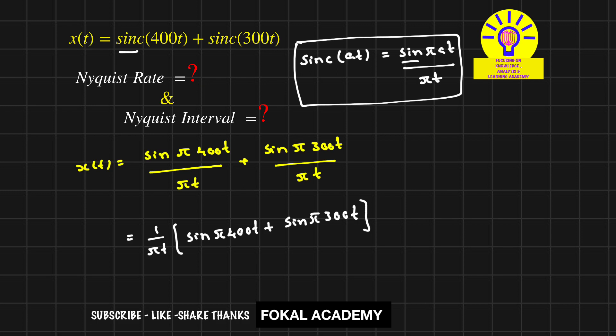Now we need the frequency for signal x(t), the message signal. Let's call that fm. How do you find the message frequency for this signal? This signal consists of two components: sin(π·400t) and sin(π·300t). First, find the individual frequencies. Consider this as f1 and this as f2.